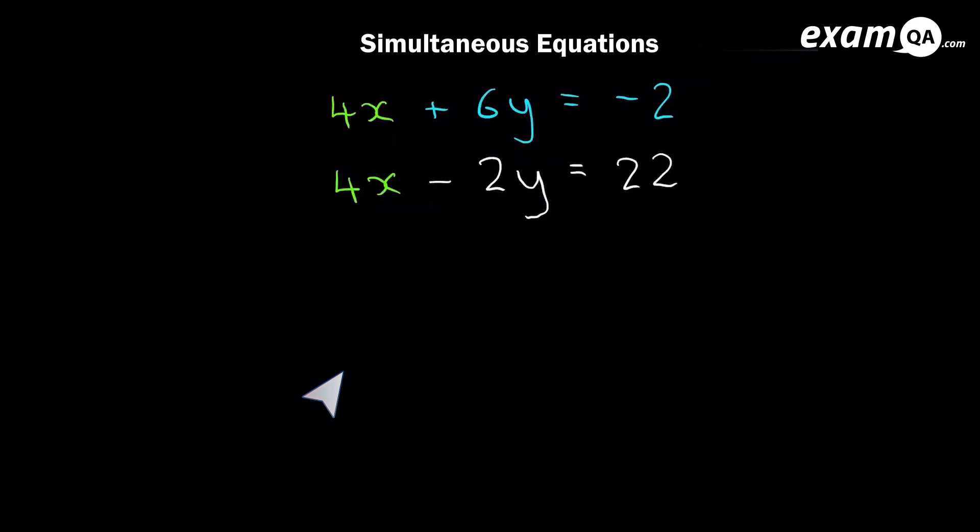So our next step is to do the subtraction. Sometimes to eliminate one of the variables, the x or the y, you might need to add. Now, what I would do is I'd reason with yourself to check which one makes sense, which one will get rid of the x's. So here, for example, if I added 4x plus 4x will become 8x, and it's not being eliminated. And remember, this is the elimination method. So since it's not being eliminated by adding, it must be subtract 4x minus 4x, which gets rid of the x's.